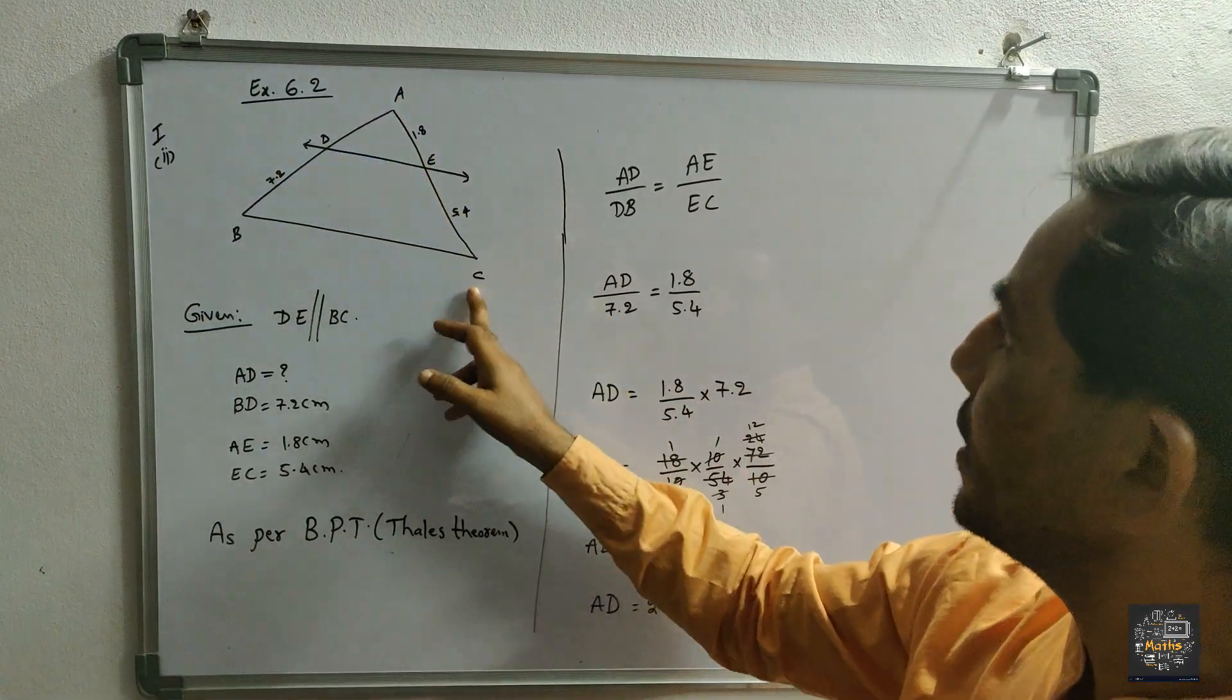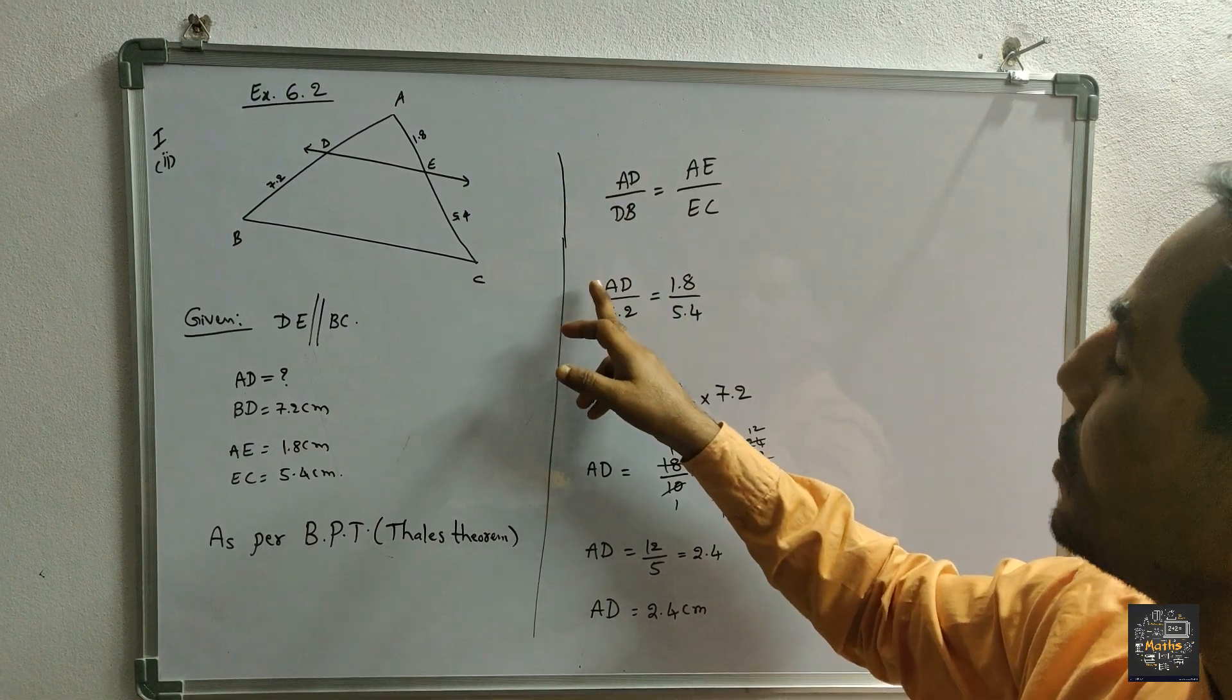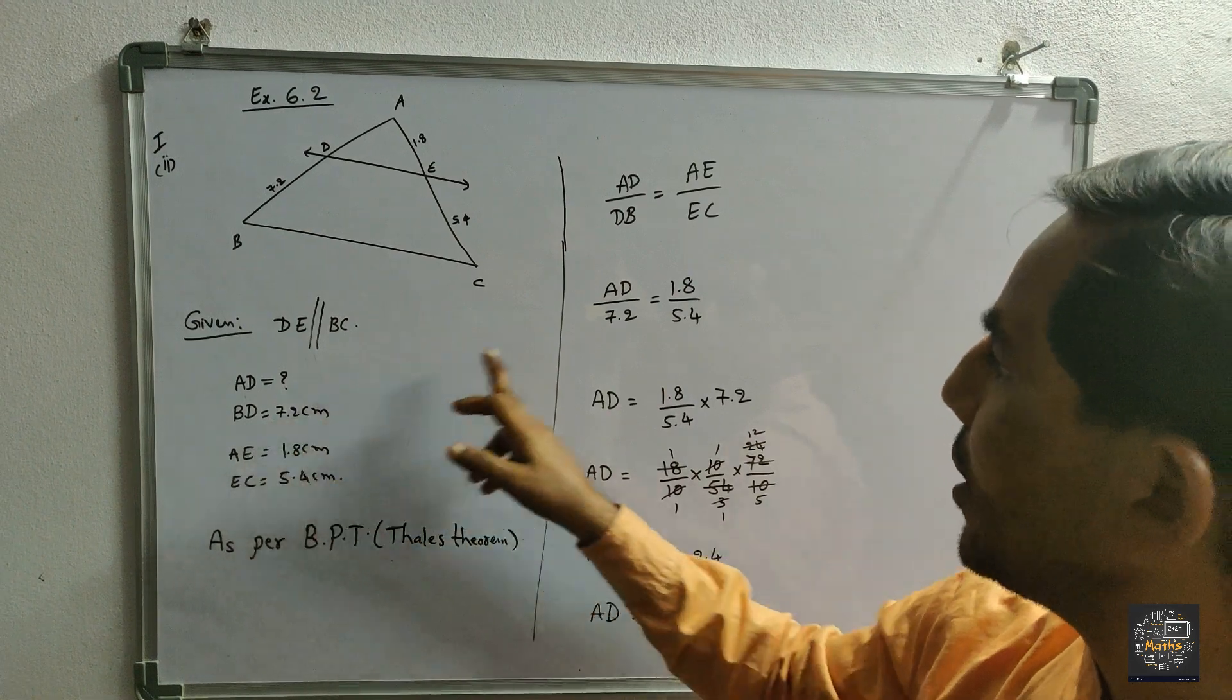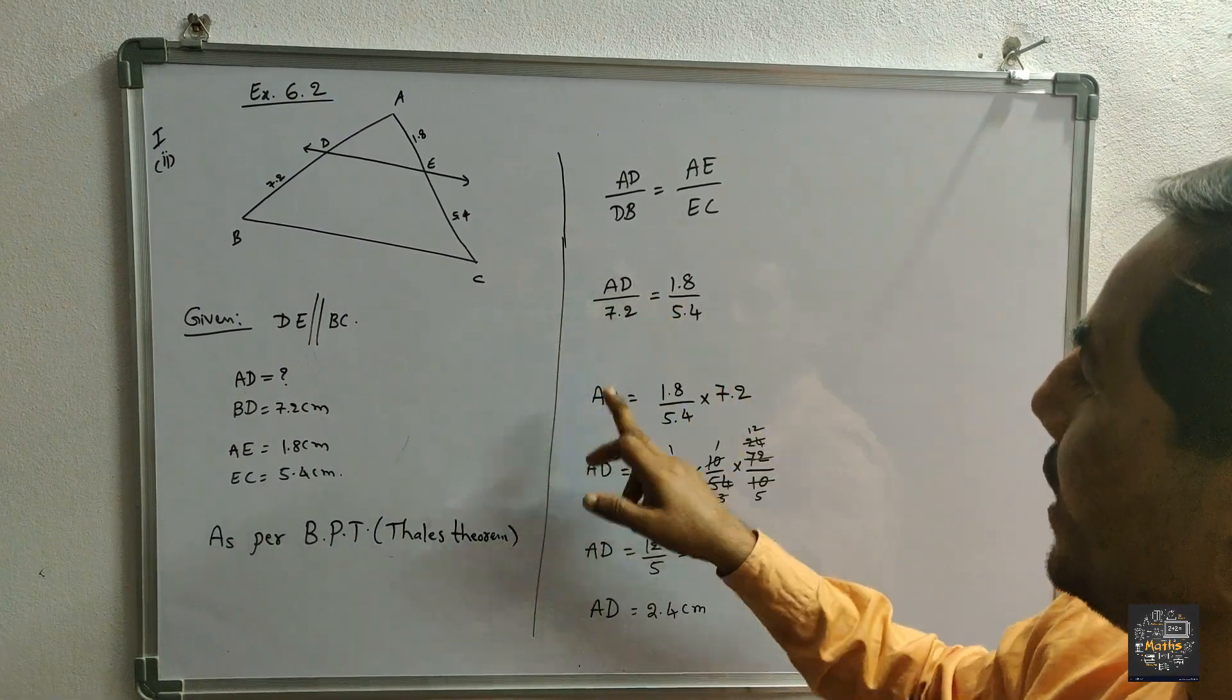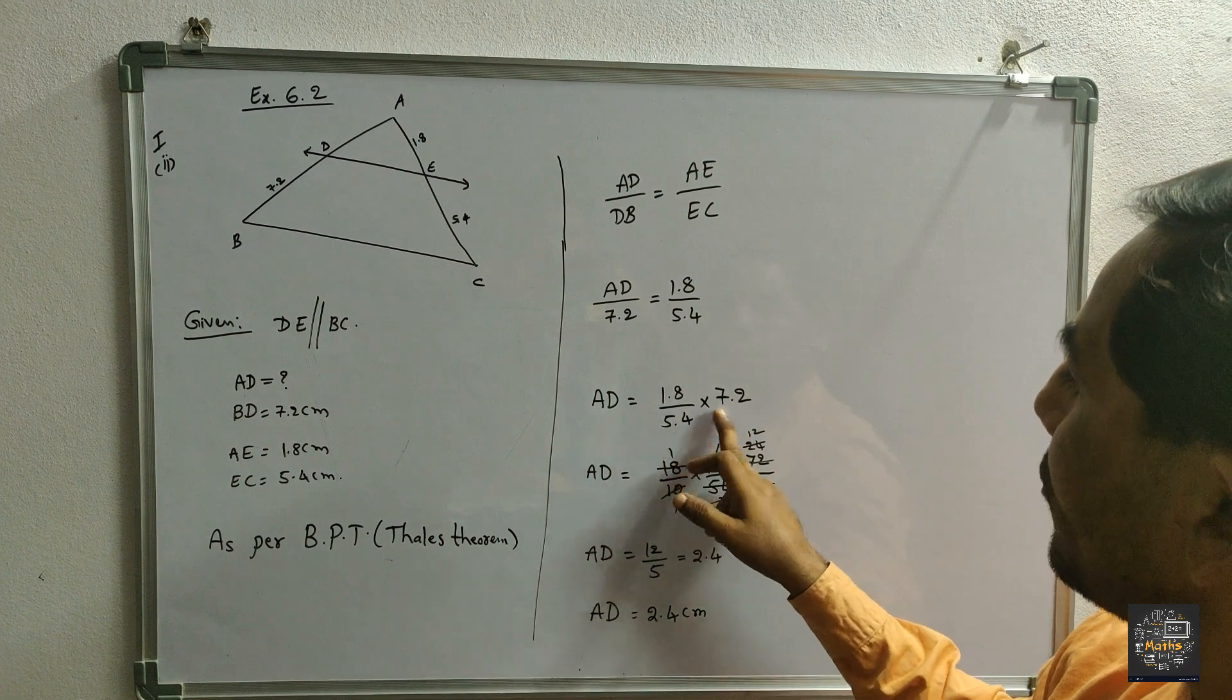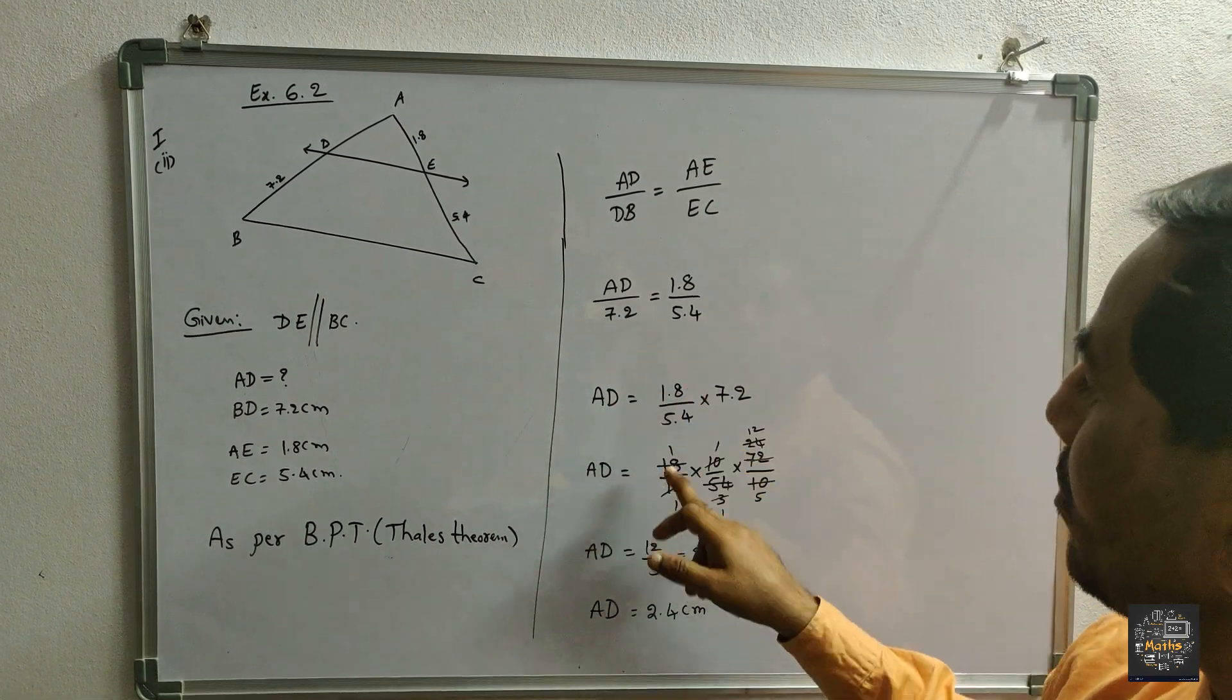AD value is not there, so that is the required value. AD by DB equals 7.2 cm. AE value 1.8 cm and EC is equal to 5.4 cm. AD is equal to, by cross multiplication, 1.8 by 5.4 into 7.2.